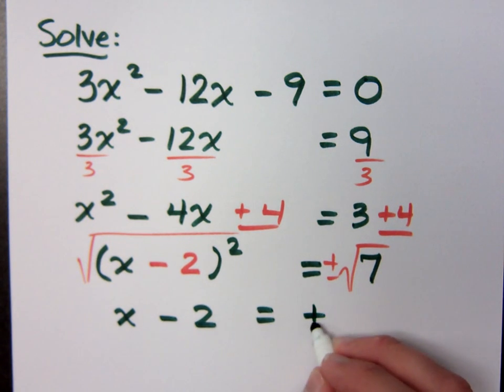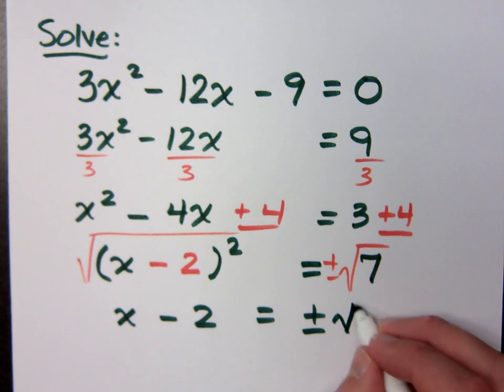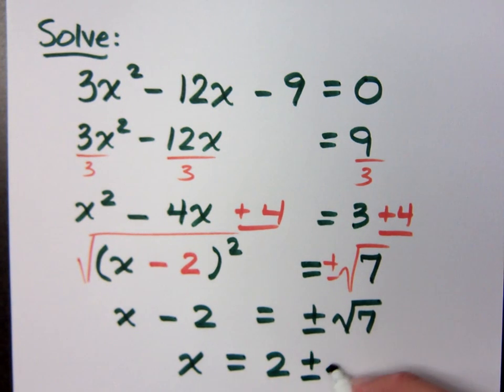x minus 2 equals what can I do with the square root of 7? The square root of 7. Finish getting x by itself and you have what? 2 plus or minus the square root of 7.